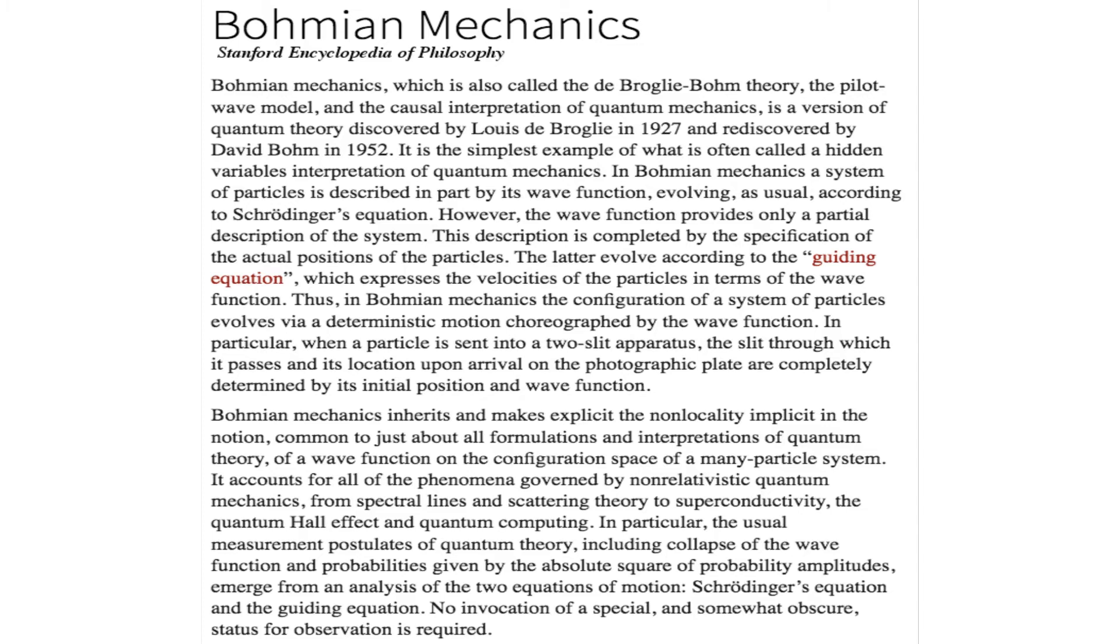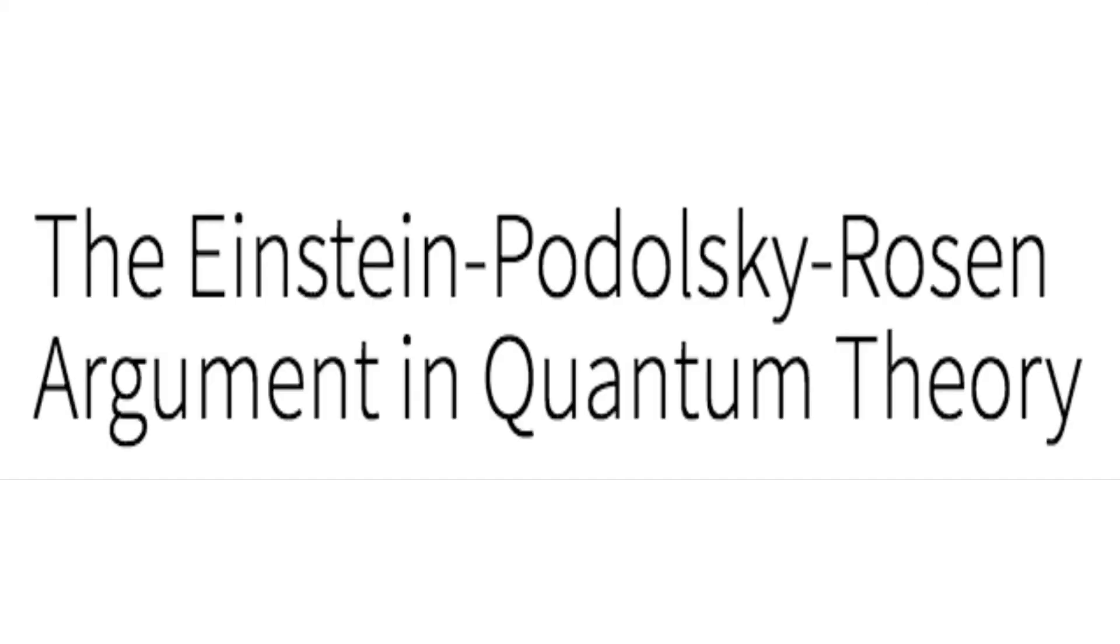Particles are called entangled when they are described by a single wave function slash guiding equation. The only property possessed by the particles is position. Properties such as spin actually belong to the shared wave function. This leads to the familiar EPR paradox, where measuring the spin of an entangled particle will also inform you of the unmeasured particle's spin.